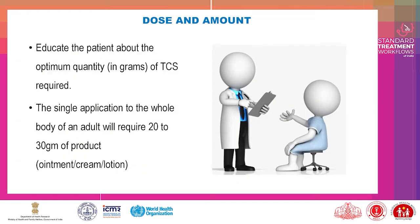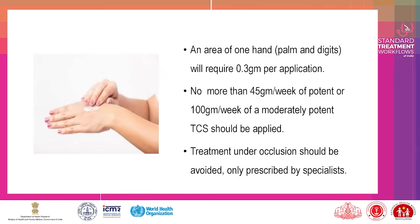Regarding dose and amount, educate the patient about the optimum quantity in grams of topical corticosteroids required. A single application to the whole body of an adult will require 20 to 30 grams of product. An area of one hand including palm and digits will require 0.3 grams per application. No more than 45 grams per week of potent, or 100 grams per week of a moderately potent topical corticosteroid should be applied. Treatment under occlusion should be avoided and only prescribed by specialists.